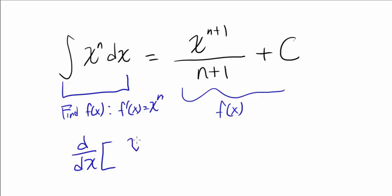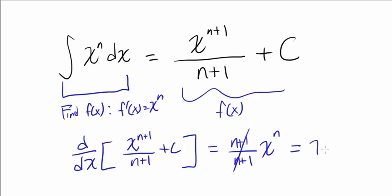What's the derivative of x to the n plus 1 over n plus 1 plus c? Well, n plus 1 comes down, so you have n plus 1 over n plus 1 times x to the n plus 1 minus 1, which is just n. The derivative of a constant is 0, and the n plus ones cancel out, so you have x to the nth. That's good!